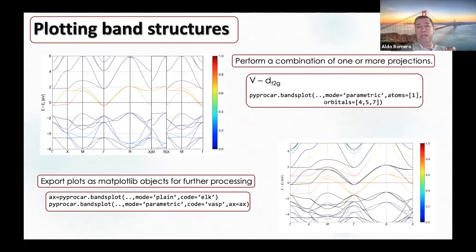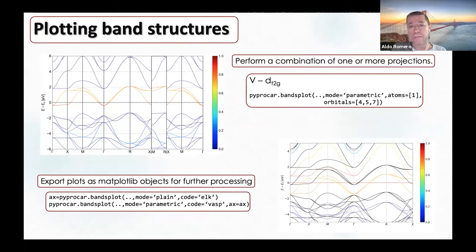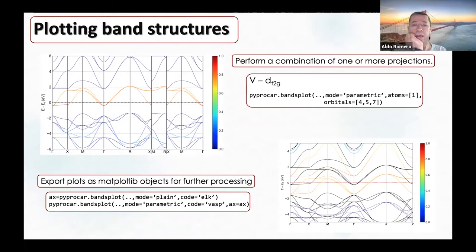Let me start with simple examples of what we can do with PyProCAR. First, we can plot using different projections. For example, we can consider only the orbitals related to the T2G. In this case it's a lanthanum vanadate, and we can plot the band structure coming only from the T2G orbitals.